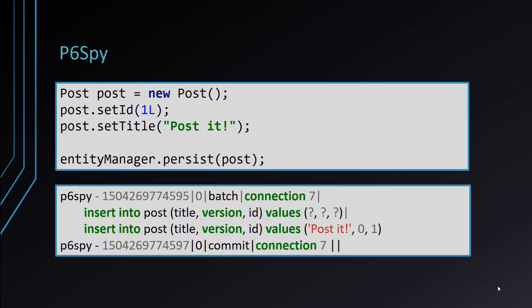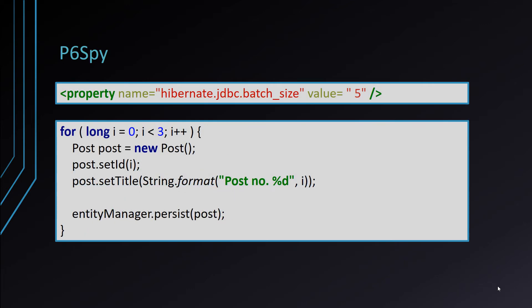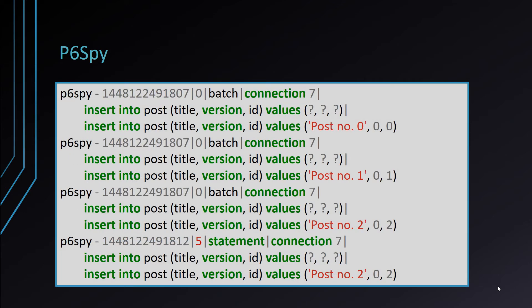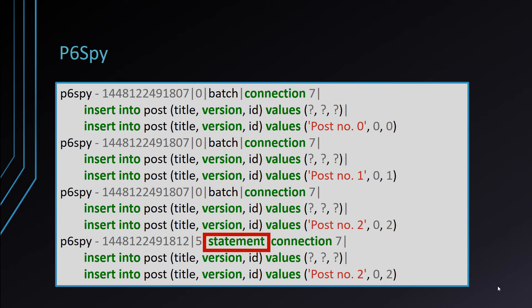Notice that the formatted statement includes the bind parameter values. Even the commit command is captured and sent to the log. Now let's see what P6Spy will log if we enable JDBC batching and persist three post entities. P6Spy is going to log four statements. The first three are associated with the addBatch method call — hence the value of 'batch' in the statement type column. The fourth log statement is triggered by the executeBatch method call. On the last log statement, the execution time is greater than the previous ones, because only after the three statements were batched at the JDBC driver level can Hibernate execute the batch and send it to the database.